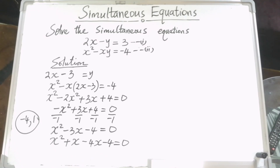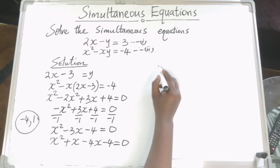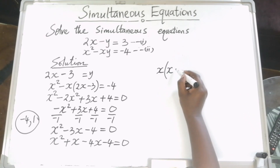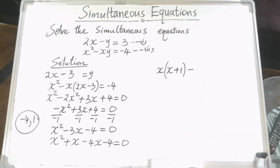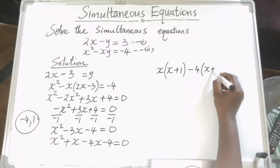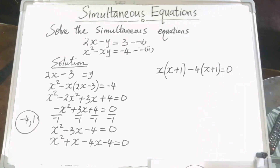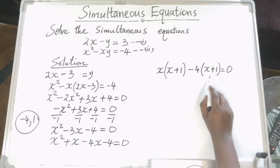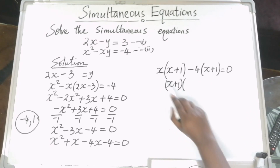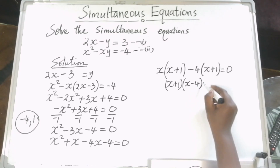Then we factorize by grouping. We have x squared plus x, where x is common, giving x open bracket x plus 1 close bracket, minus 4x minus 4, where minus 4 is common, giving minus 4 open bracket x plus 1 close bracket equals 0.